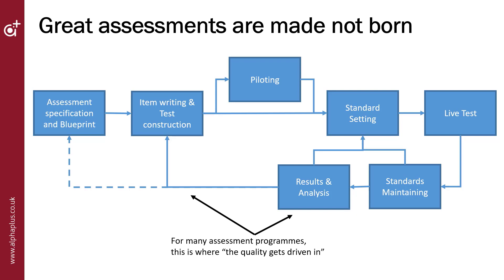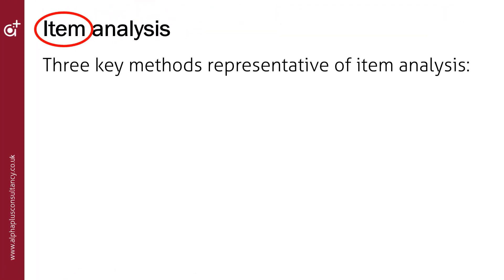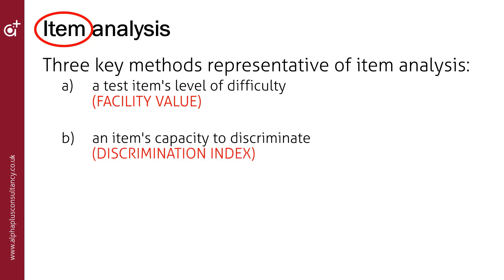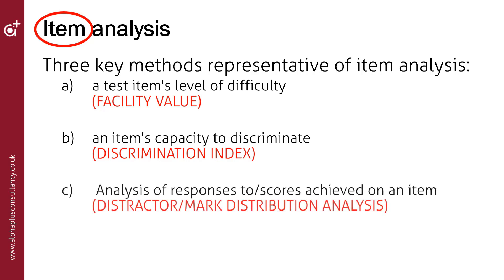If you understand the way your assessment performs, you can identify ways it could be better and make the changes. This is why we say good assessments are not born — they are made using the evidence to shape this process. Analysis of assessments can be done at item level or whole assessment level. Item analysis has three key methods: facility value, which is a measure of the difficulty of an item; discrimination index, which measures how well the item discriminates between less able and more able students; and distractor and mark distribution analysis, which use graphs to depict how students respond to objective questions.